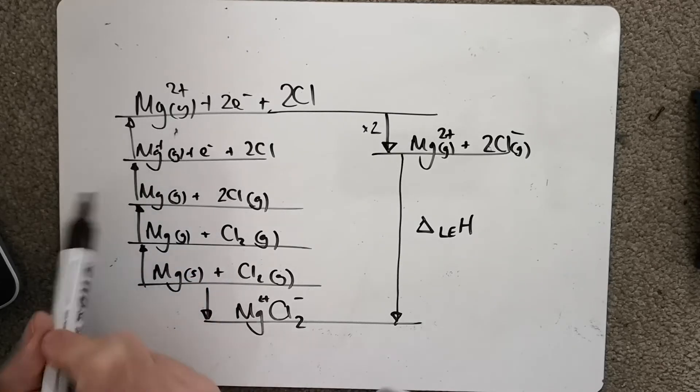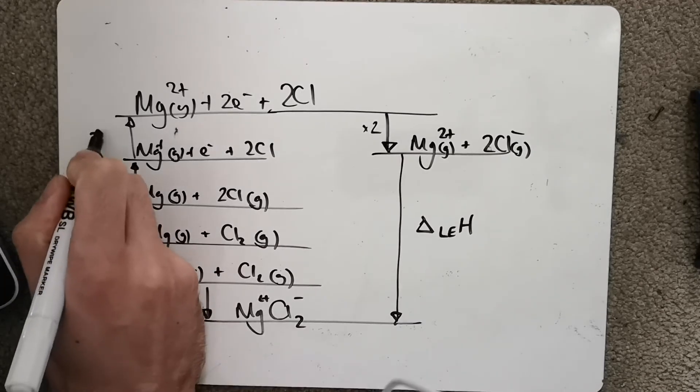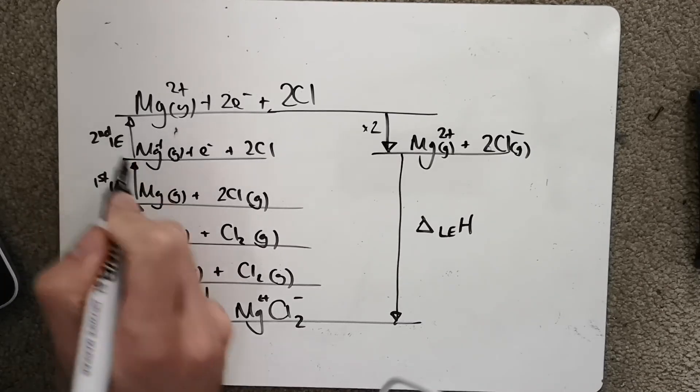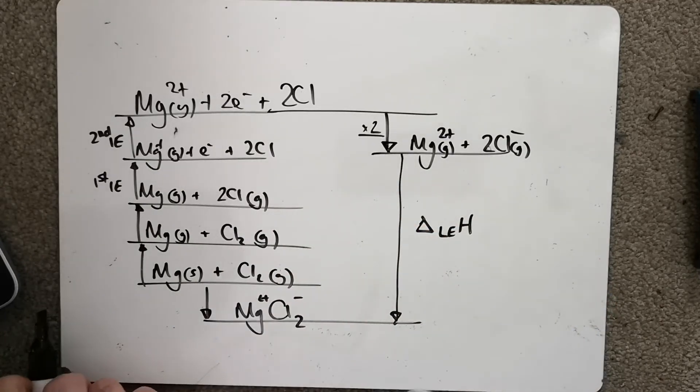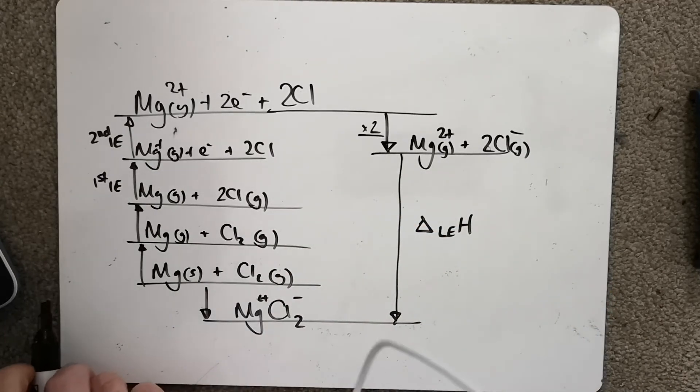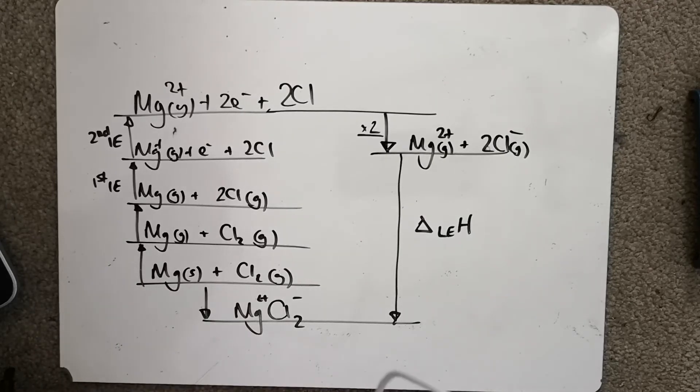So we've got first ionisation energy over here, first IE, second IE. The electron affinity of chlorine needed to be times by two because we've got two chlorines. We've got the atomisations here and the formation there.